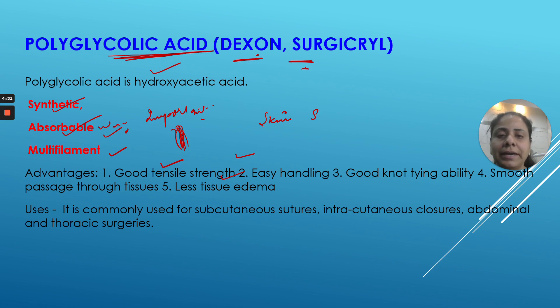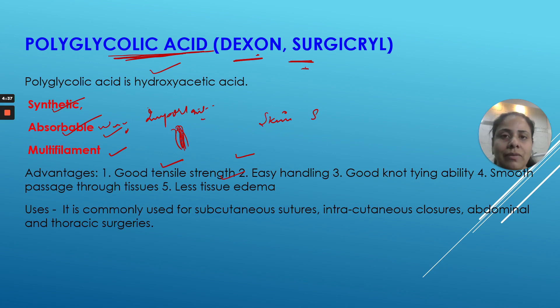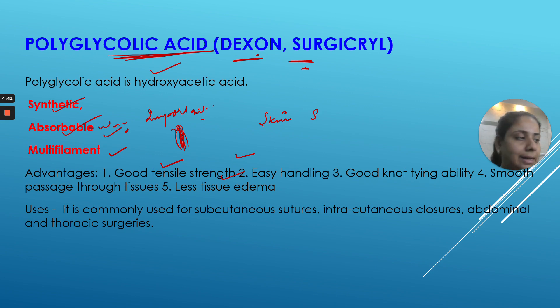The brand names for polyglycolic acid are Dexon and Surgically. It is worth reading these for the theoretical part, because knowing the various sutures available makes clinical decision-making much easier.